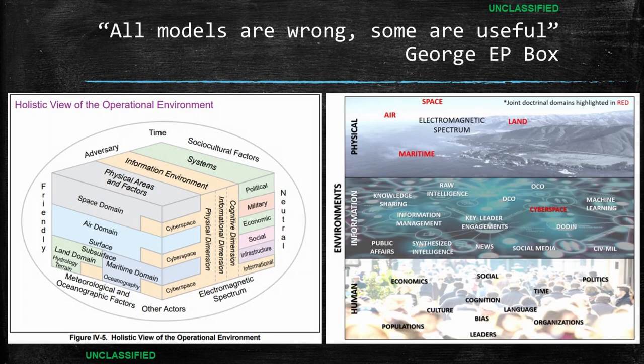On the bottom of the slide are two models of the operating environment depicting the domains — right side in red — and the environments. The left side is from Joint Pub 5-0. The right side is from the JADO Doctrine publication. As mentioned earlier, agility between domains is a critical change in the operating environment.